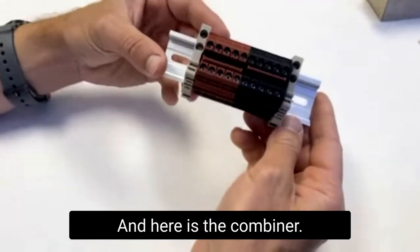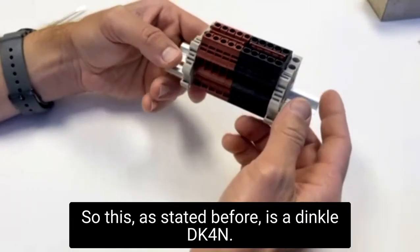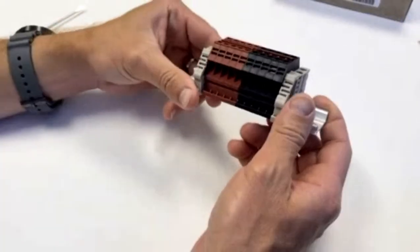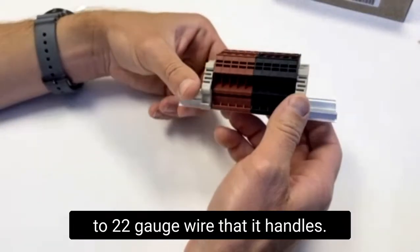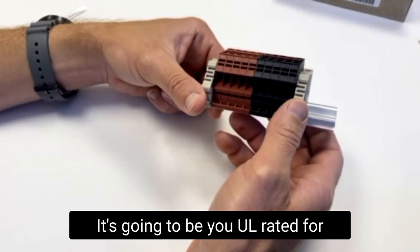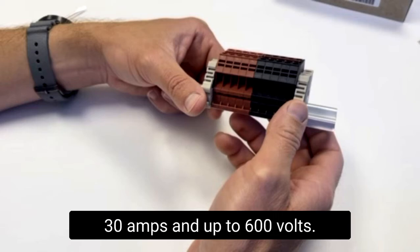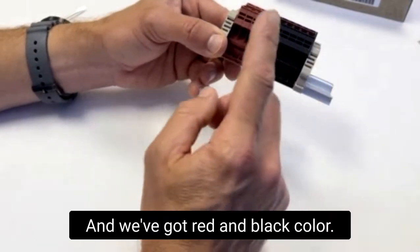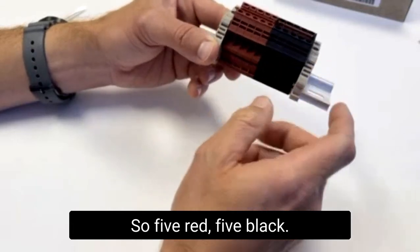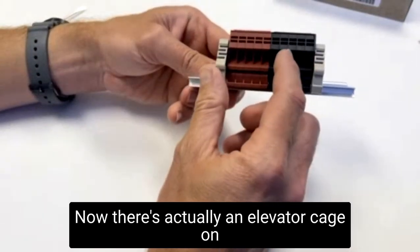Here is the combiner. This is a Dinkle DK4N. It handles 10 to 22 gauge wire, it's UL rated for 30 amps and up to 600 volts. We've got red and black colors, five red, five black. There's actually an elevator cage.